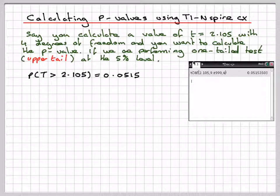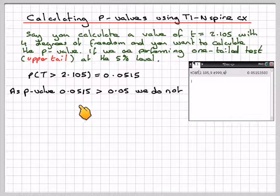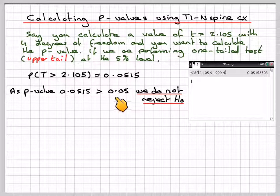So we write down the probability. This probability is actually the p-value. As the p-value 0.0515 is greater than 0.05 (which is 5%), we do not reject H₀.